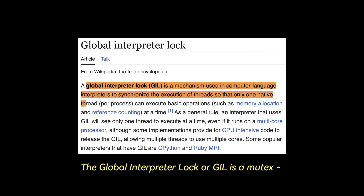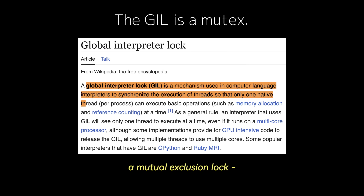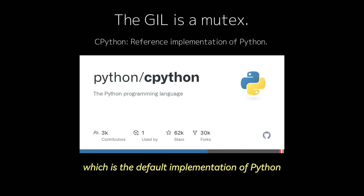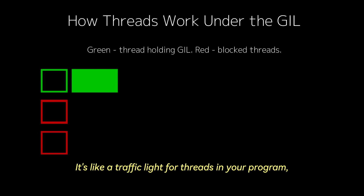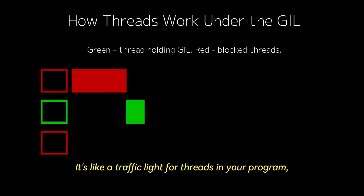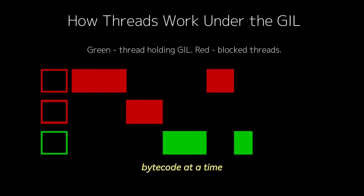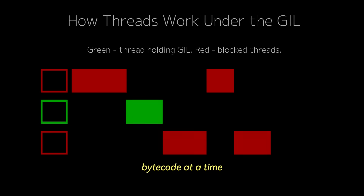The global interpreter lock, or GIL, is a mutex — a mutual exclusion lock — that protects access to Python objects in CPython, which is the default implementation of Python. It's like a traffic light for threads in your program, making sure only one thread can execute Python bytecode at a time.